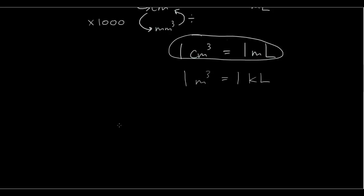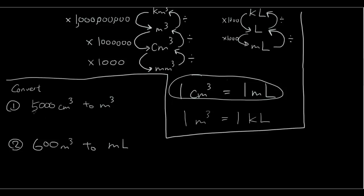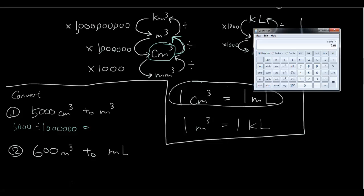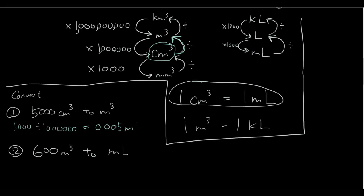Let's do some conversion questions. First: 5000 centimeters cubed to meters cubed. On our conversion ladder, centimeters cubed is below meters cubed, so we divide by a million. 5000 divided by 1,000,000 equals 0.005 meters cubed.